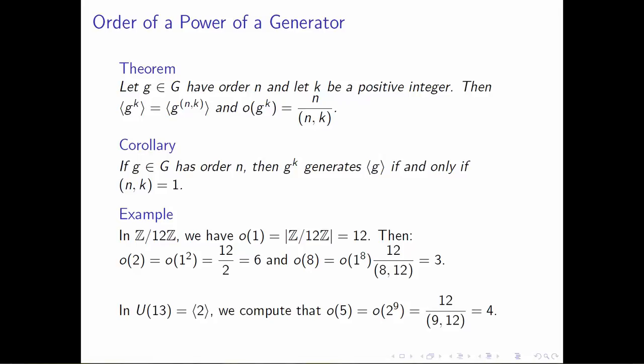You could also go to our less intuitive example, which was U(13). We saw that U(13) was the group generated by 2. If we're interested in computing the order of the element 5, we view 5 as a power of 2. Since 5 belongs to this cyclic group, it can be written as 2 to some power—from our table, 5 equals 2 to the 9th power. To determine the order of 5, we take 12 and divide by the greatest common divisor of 9 and 12, which is 3, giving the order of 5 as 4 inside U(13).